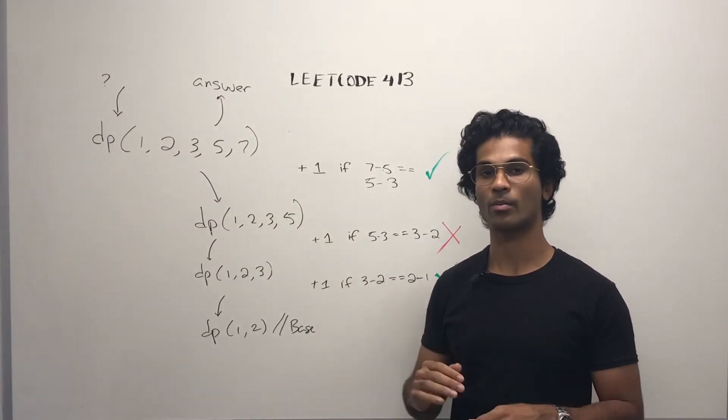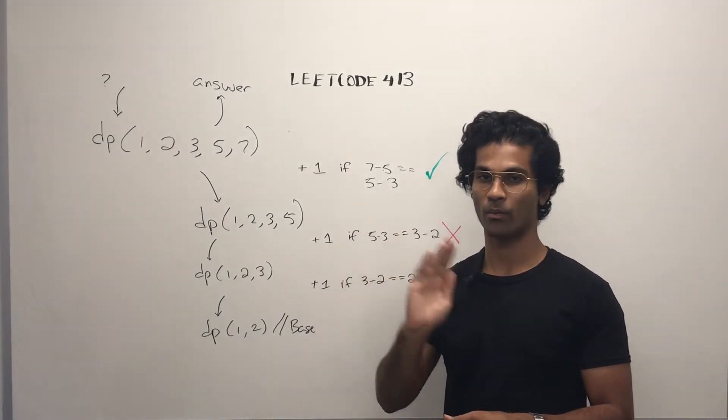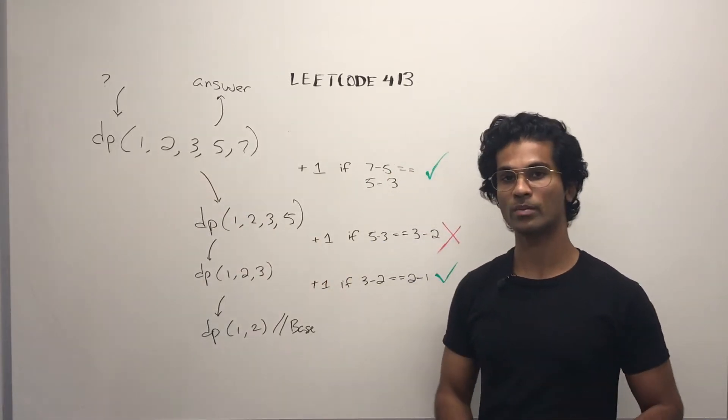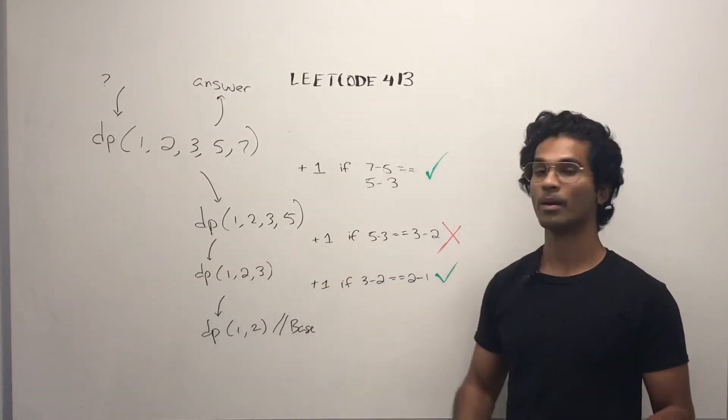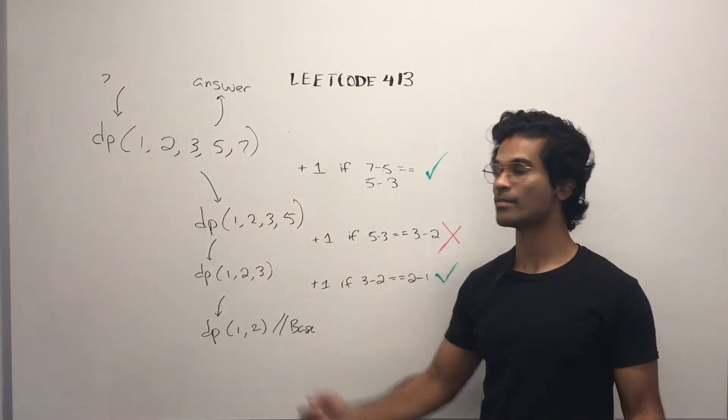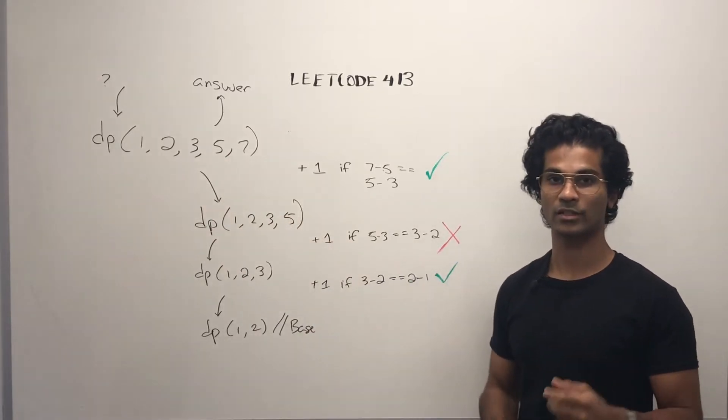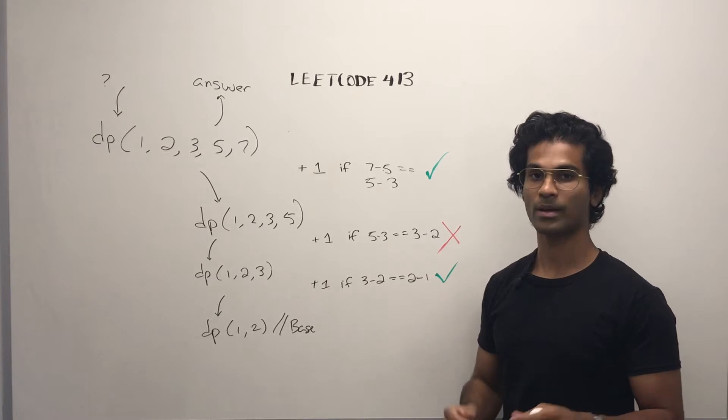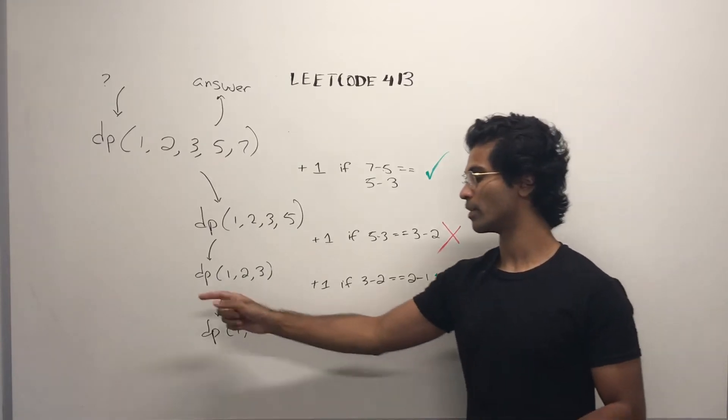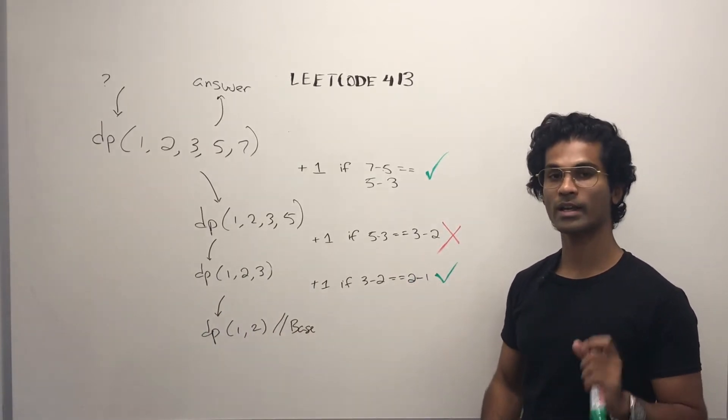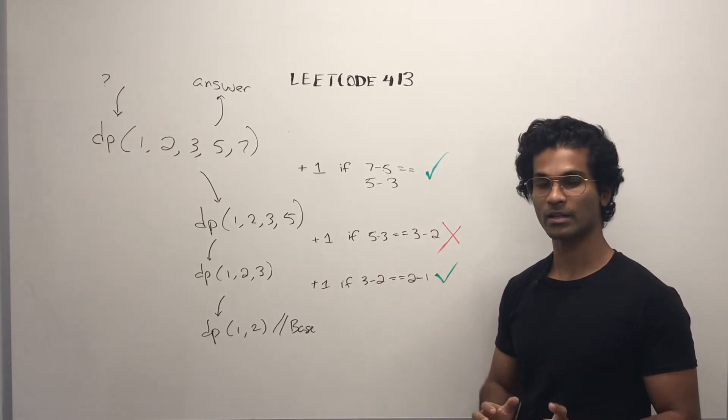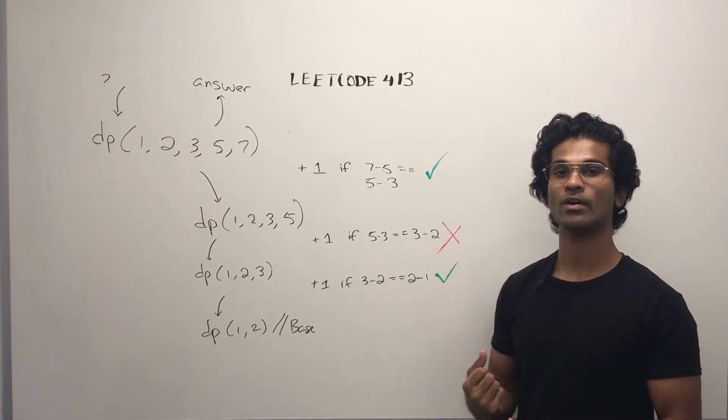So how do we make this smaller and re-ask the same question in a way that makes sense, and we can apply some logic to it? Well, when we ask what's the maximum arithmetic slices we have, we're going to get an answer. And first, we're going to break it down by reducing the array by one number.